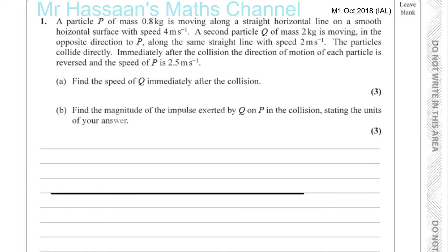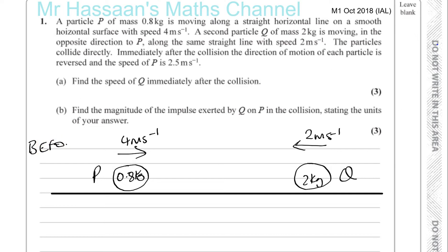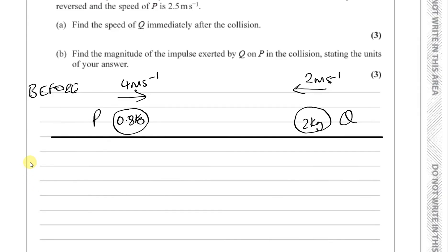So now we've got two particles moving towards each other, P and Q. That's P and that's Q. This is 0.8 kilograms and this one is 2 kilograms. P is moving in this direction with a speed of 4 meters per second, and Q is moving in this direction with a speed of 2 meters per second — so Q is moving right. The particles collide. This is before the collision.